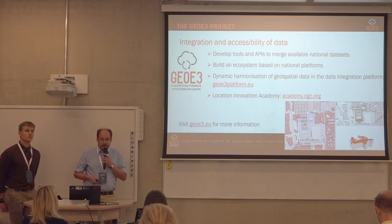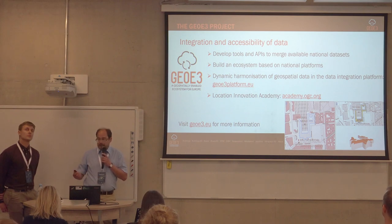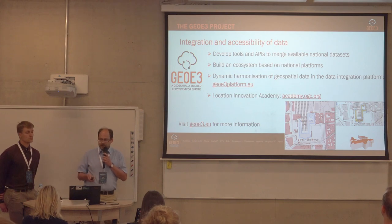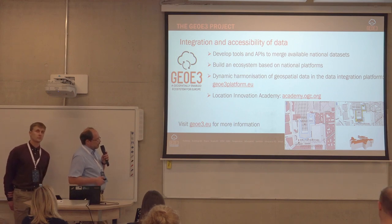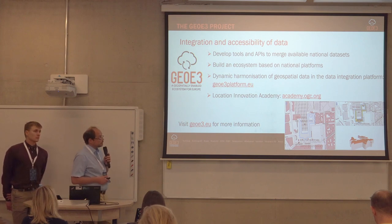Our data platform does dynamic harmonization. We have datasets from different countries, but not all of these countries supply data using OGC API Features — some of them are using the older Web Feature Service. But this dynamic harmonization does it dynamically for you. So if you access our data portal, you can access it using this new Features API. And you can see which datasets are available currently — like buildings, roads, terrain. There are quite a lot of different data.